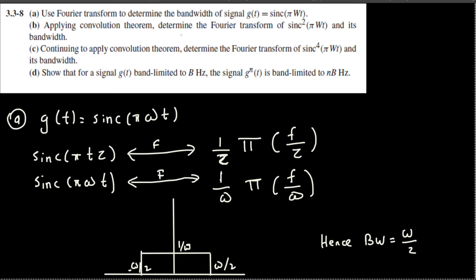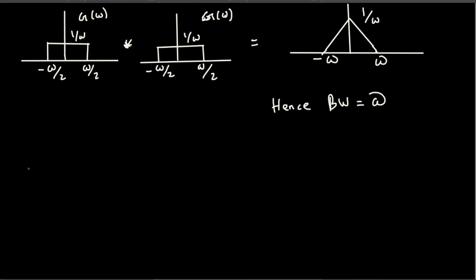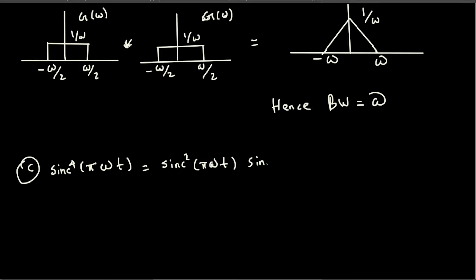Now for Part C: continuing to apply the convolution theorem, determine the Fourier transform of sinc⁴(φωt) and its bandwidth. We write sinc⁴(φωt) = sinc²(φωt) × sinc²(φωt). So now we need to convolve the Fourier transform of sinc²(φωt) with itself — that is, the convolution of two triangular functions.